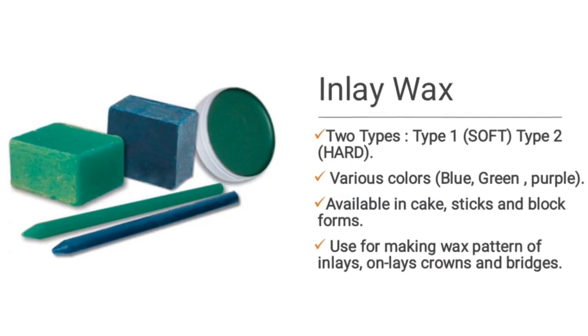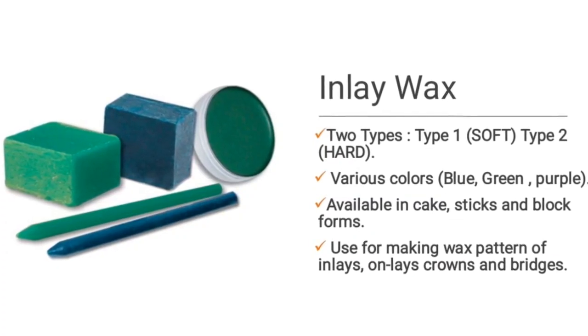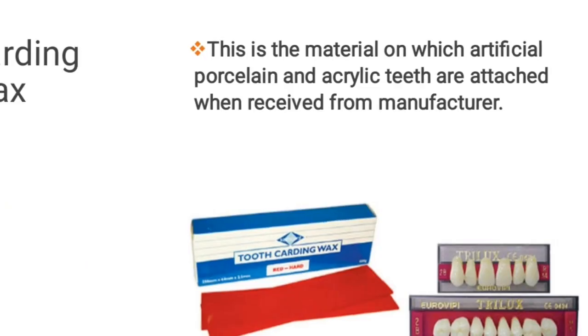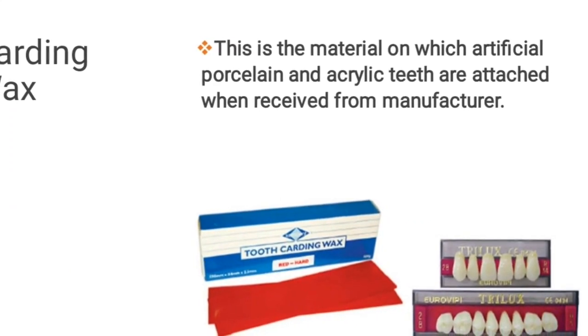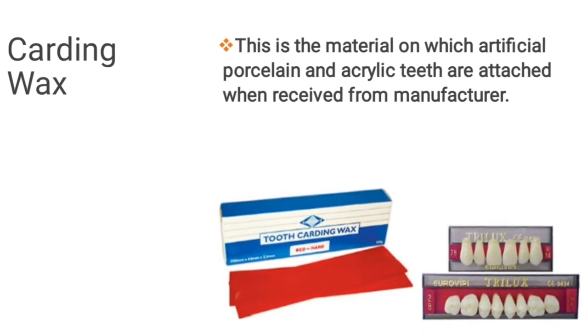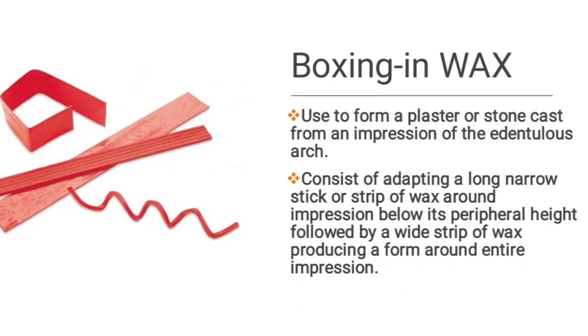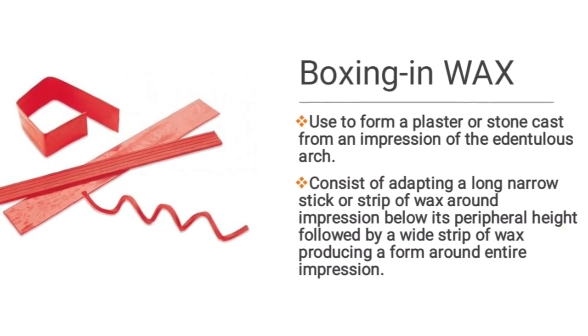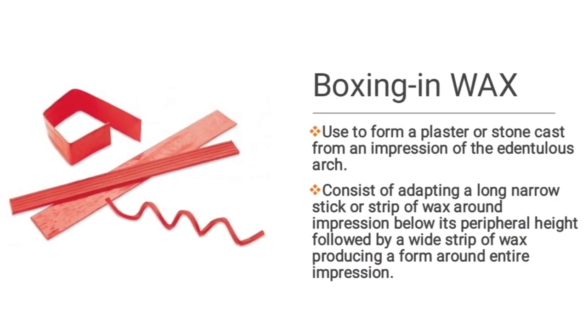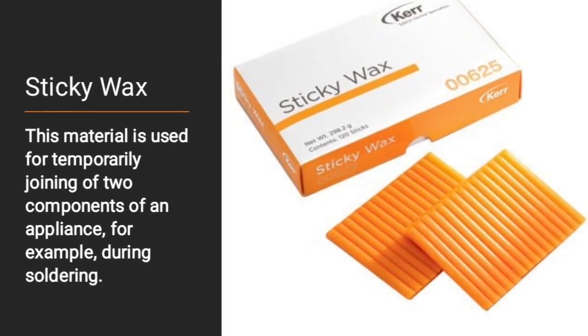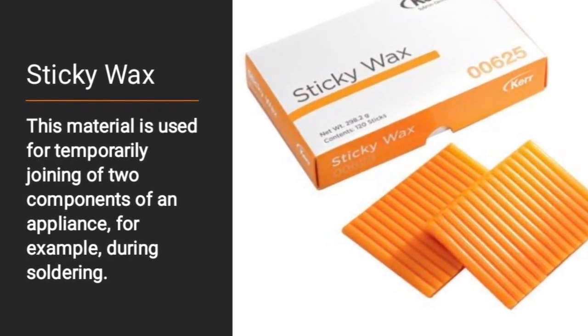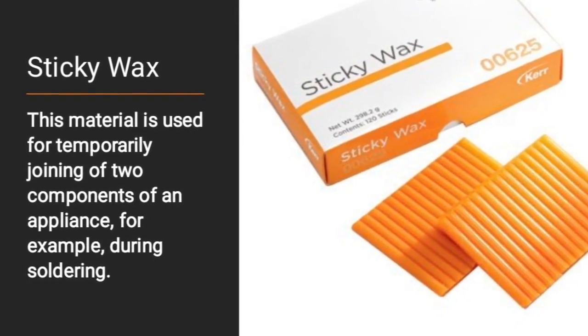Now I will show you the slides of certain dental waxes that are mentioned in the book with their particular uses. Inlay wax: two types, type 1 soft and type 2 hard, various colors blue, green, purple, available in cake, sticks and block forms. Used for making wax pattern of inlays, onlays, crowns and bridges. Carding wax: this is the material on which artificial porcelain and acrylic teeth are attached when received from the manufacturer. Boxing wax: used to form a plaster or stone cast from an impression of the edentulous arch. Sticky wax: this material is used for temporary joining of two components of an appliance, for example during soldering.